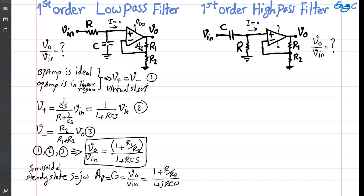Intuitively, at very high frequency the impedance of the capacitor approaches zero, so it acts as a short circuit. This connects the positive input terminal of the op-amp to ground. Due to the virtual short, the negative input also becomes zero, and therefore the output is zero — nothing passes from input to output at high frequency. This confirms the circuit is a low-pass filter.